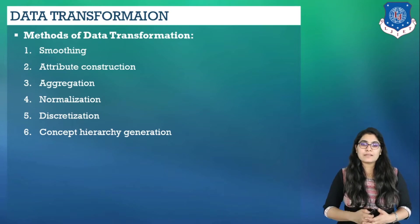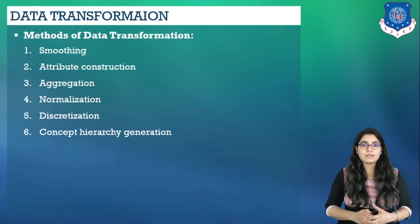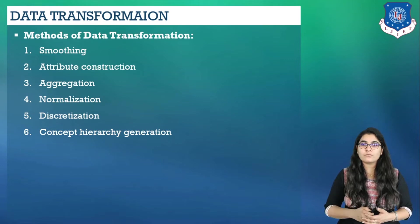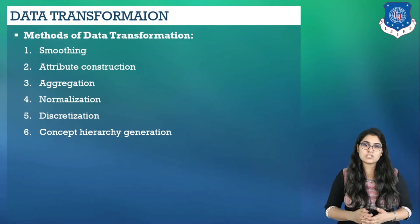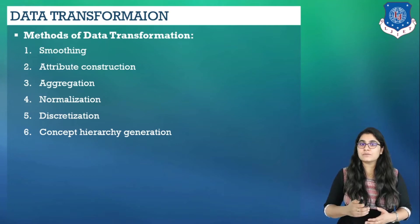Different aggregation functions like mean, max, sum, or average can be applied on data. Next is normalization, where attribute data are scaled so as to fall within a smaller range such as -1 to 1 or 0 to 1. In today's lecture we will discuss different methods of normalization.